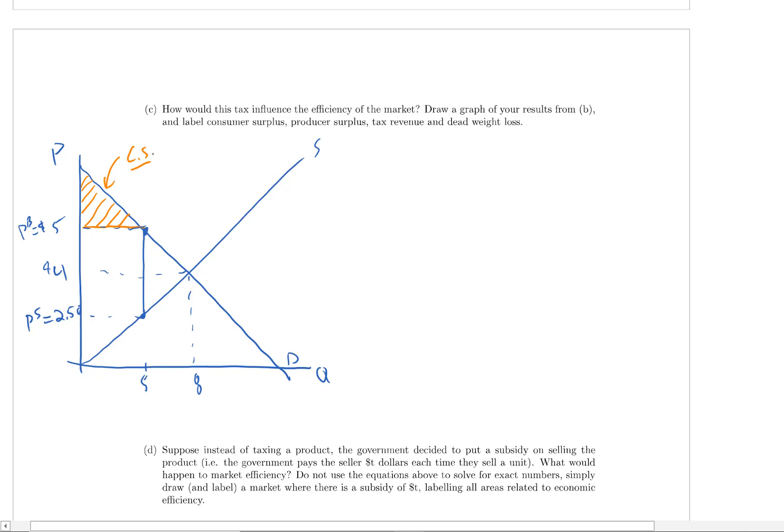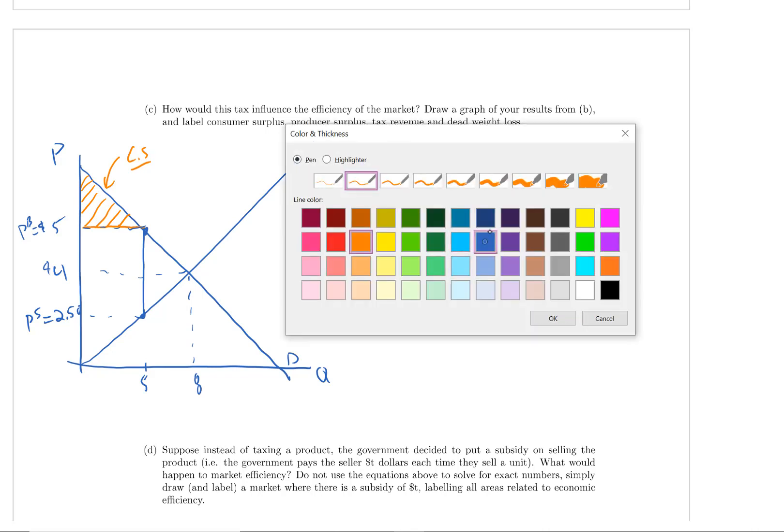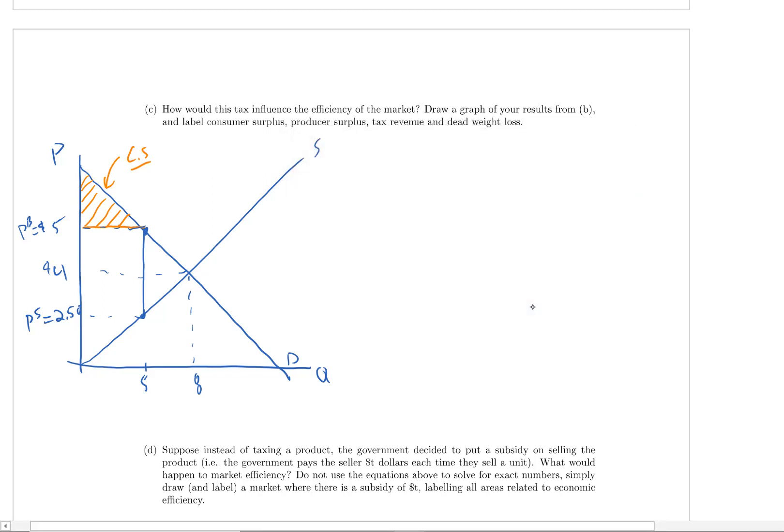Now producer surplus, everything above the supply curve and below the price the sellers get. Again, you can only count up to a quantity of five since that's the amount that's exchanged on this market. So let's pick a different color. Purple, for instance. Hopefully we can tell the difference. So this area here is the producer surplus.